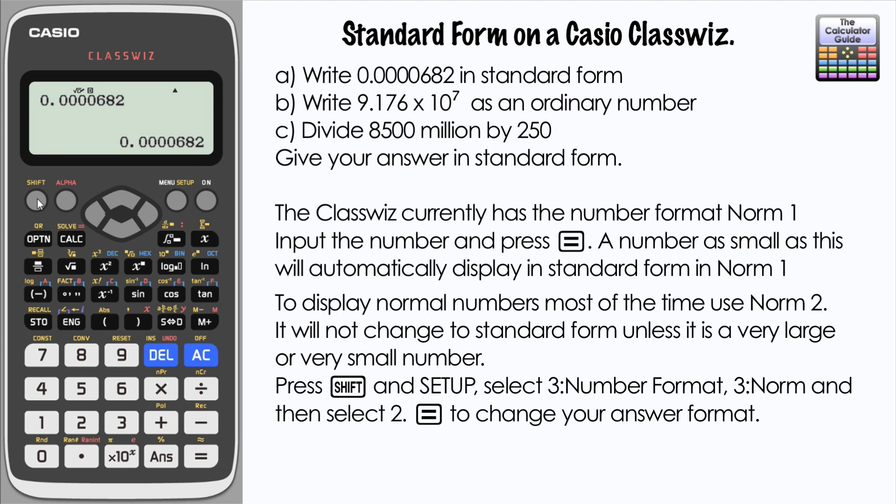Once again, if you wanted it as norm 1, it's shift, menu, 3, 3, and then 1 for norm 1, equals. And you can see that's changed it to standard form for us.